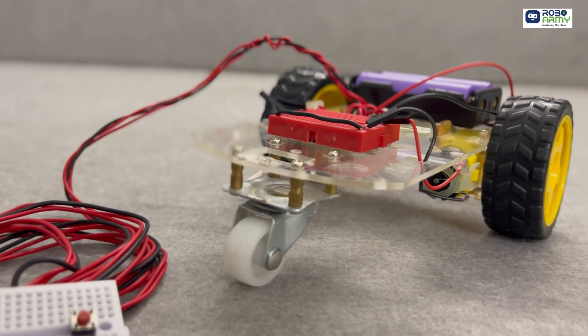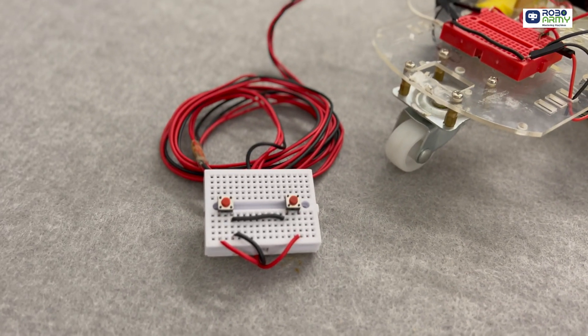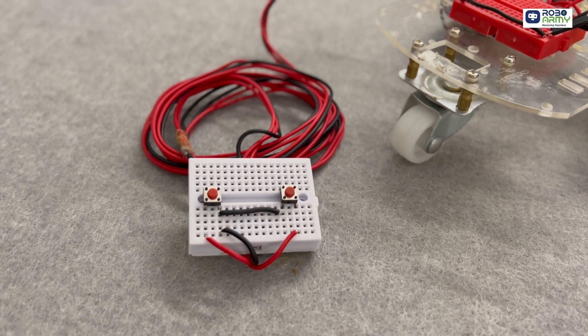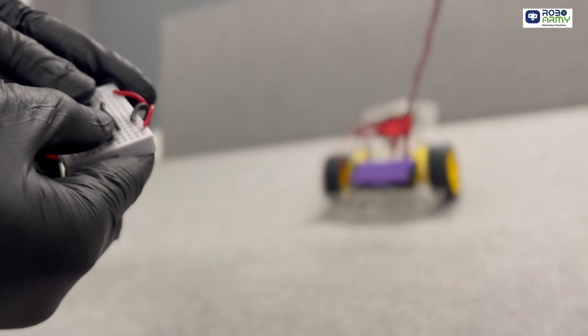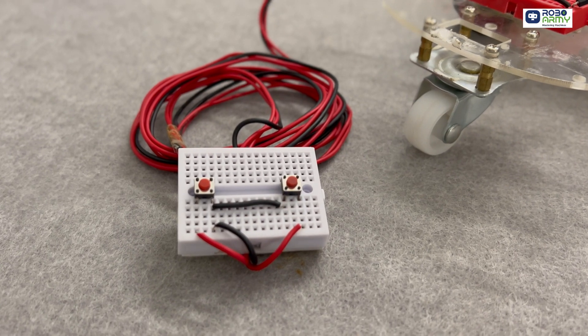Today we will build a steerable robot controlled by a wired remote. Each button on the remote controls one motor. Press one button to turn the robot. Press both buttons to drive straight.